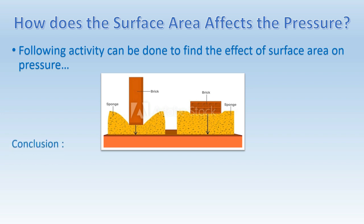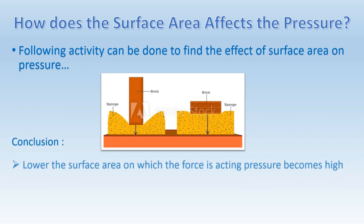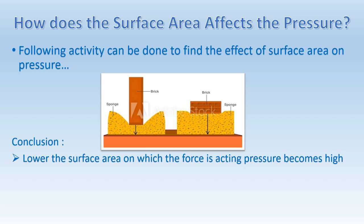So with the observations you will be able to conclude that the pressure becomes higher when the surface area is lower and the pressure becomes lower when the surface area is higher.